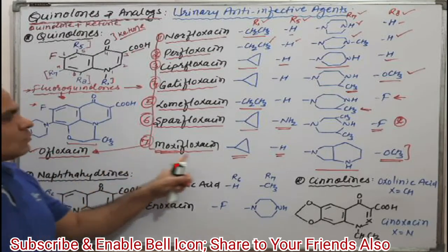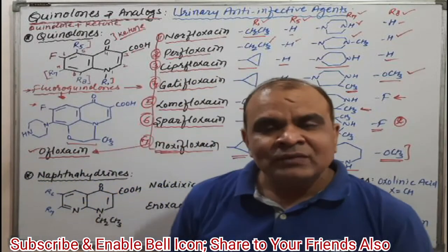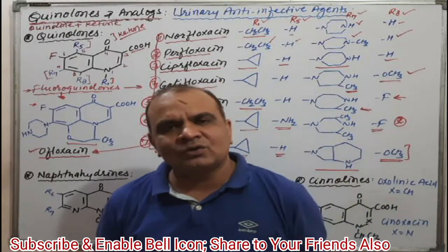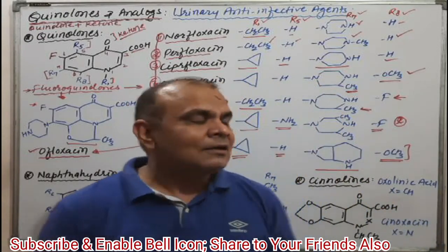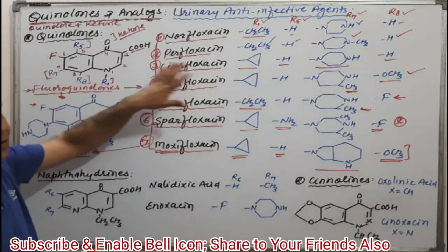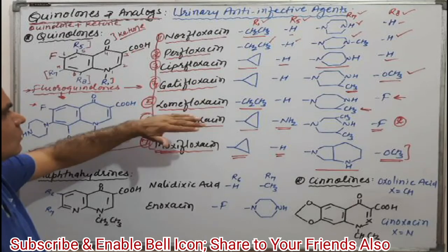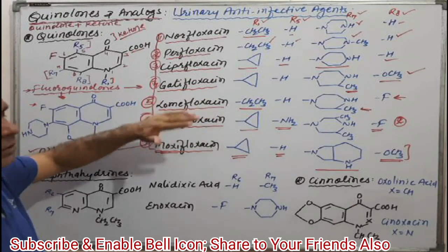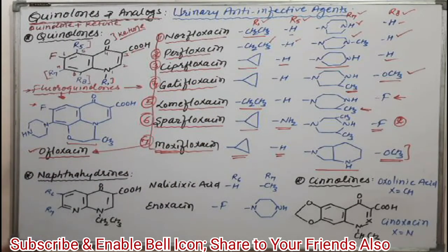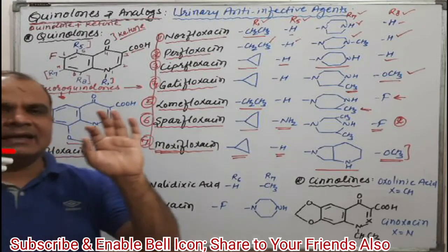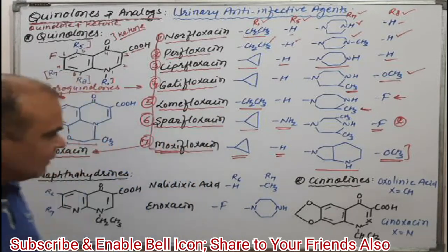This is all about the fluoroquinolones. These are totally synthetic molecules — that is why these are not antibiotics. Ciprofloxacin, pefloxacin, norfloxacin, gatifloxacin, lomefloxacin, sparfloxacin, moxifloxacin, and ofloxacin — these are totally in the antibacterial category, not antibiotics.